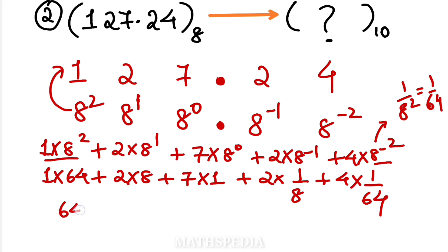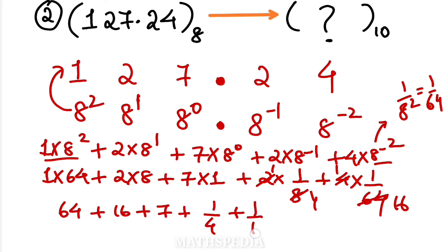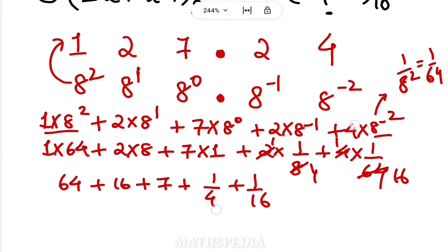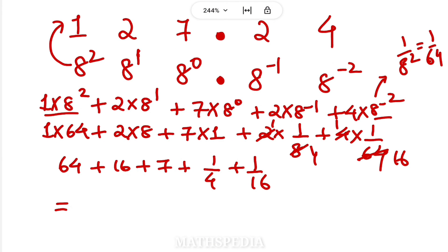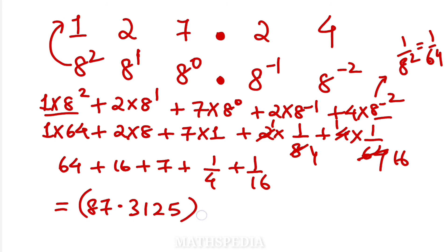So the calculation is: 64 + 16 + 7 + 2/8 + 4/64, which simplifies to 64 + 16 + 7 + 1/4 + 1/16. You can put this in a calculator to get the answer 87.3125 in base 10. That's how we convert octal to decimal both with and without a decimal point.